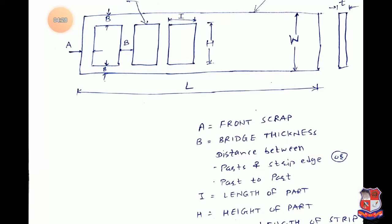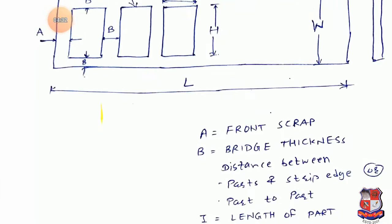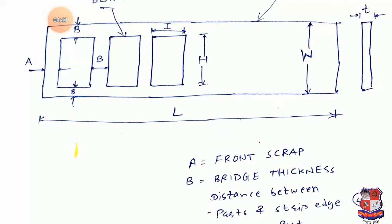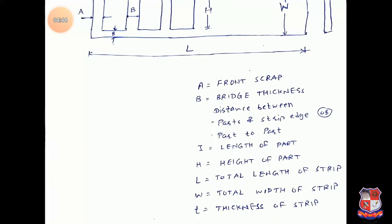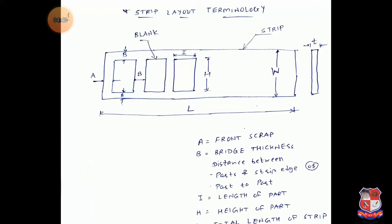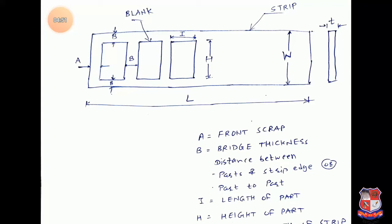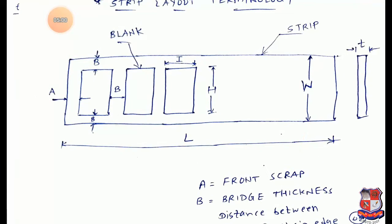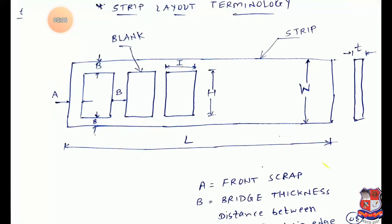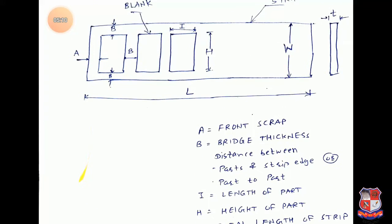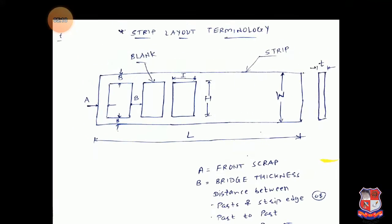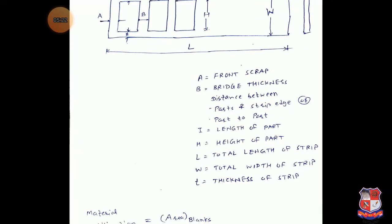I is the length of the part or blank. H is the total height of the blank. L is the total length of the strip. W is the total width of the strip — the width of the sheet metal strip from which blanks are made. The thickness of the strip is denoted by small t. These are the terminology terms you need to remember when calculating the layout.